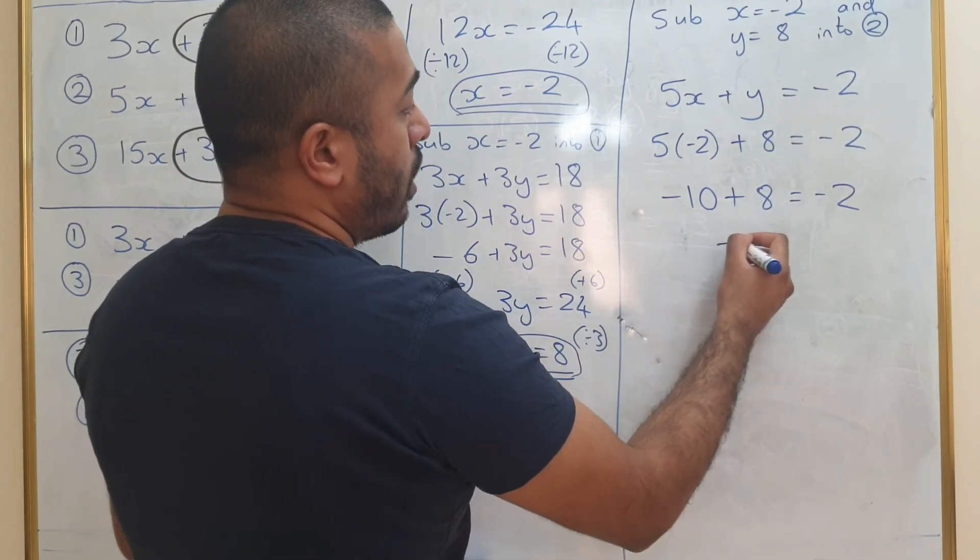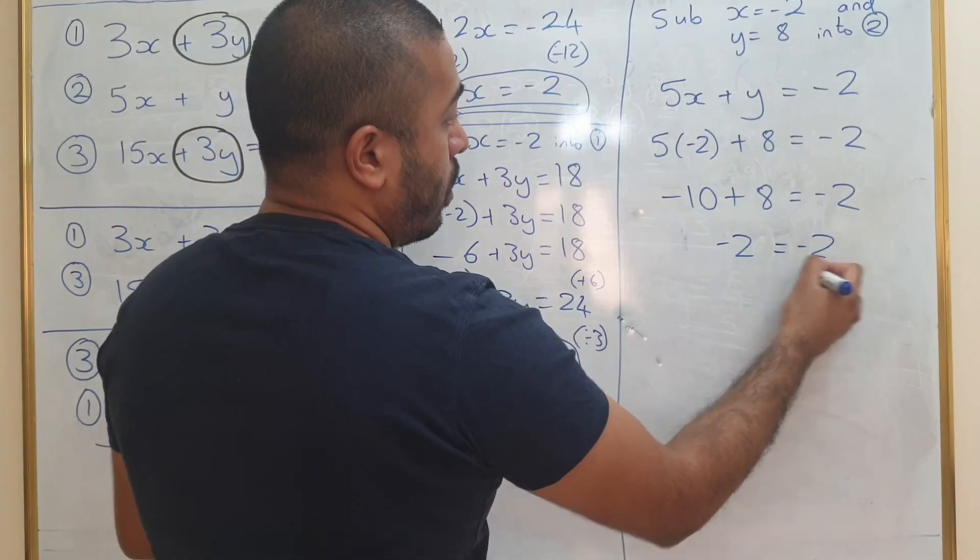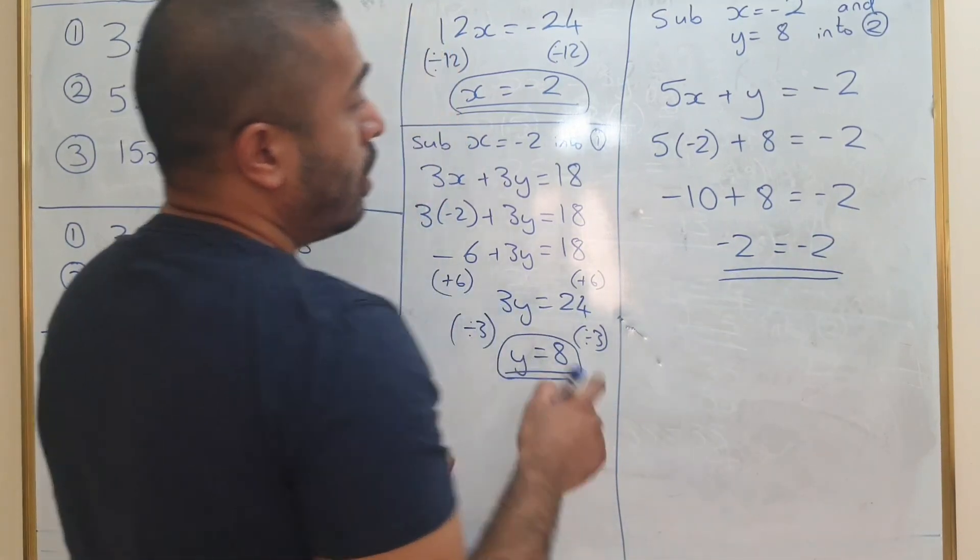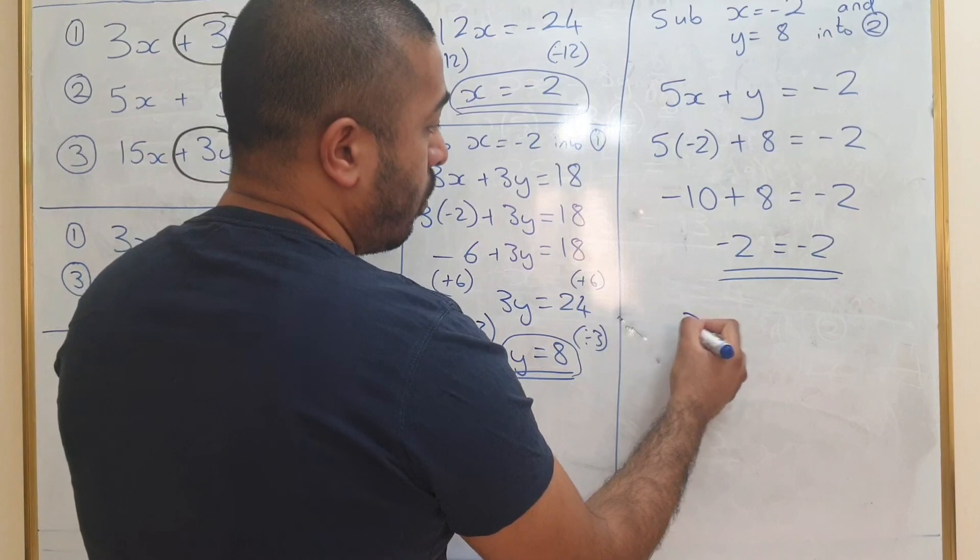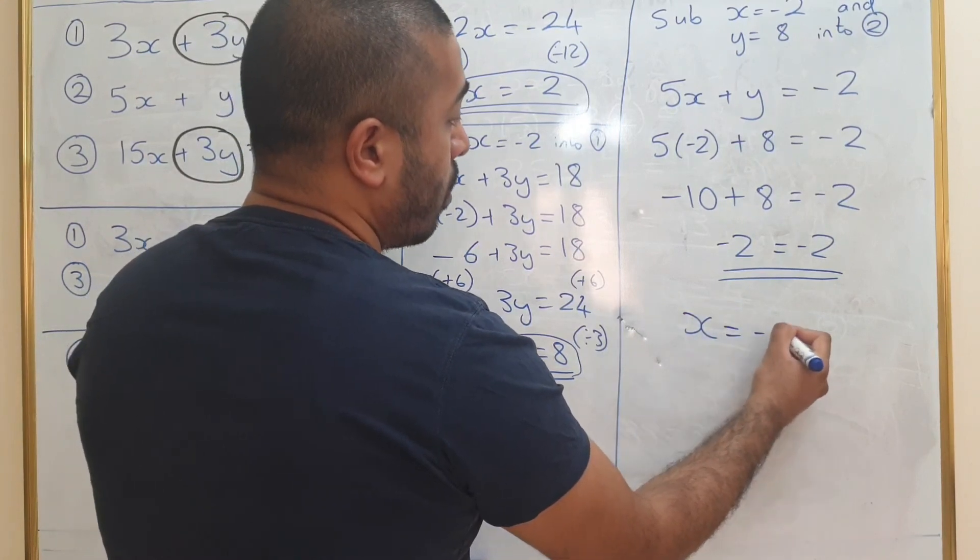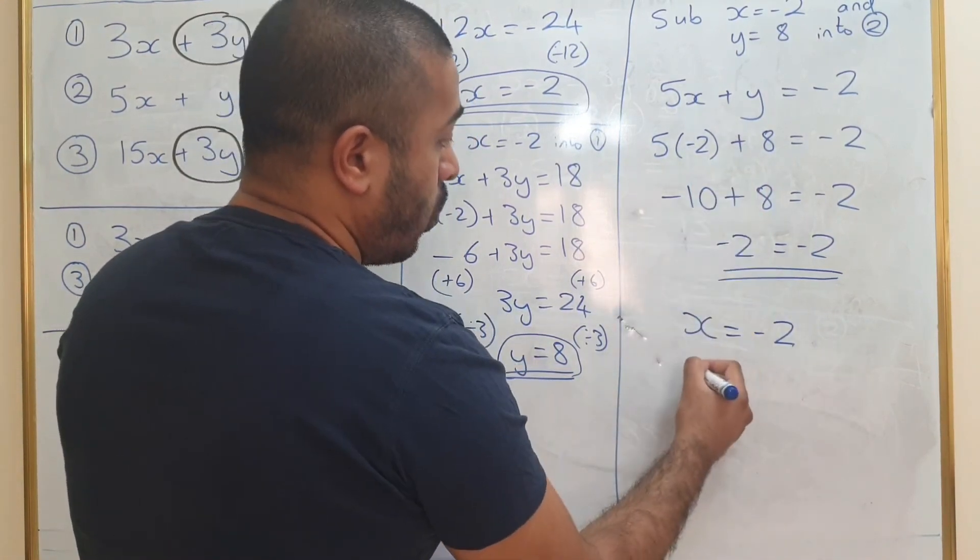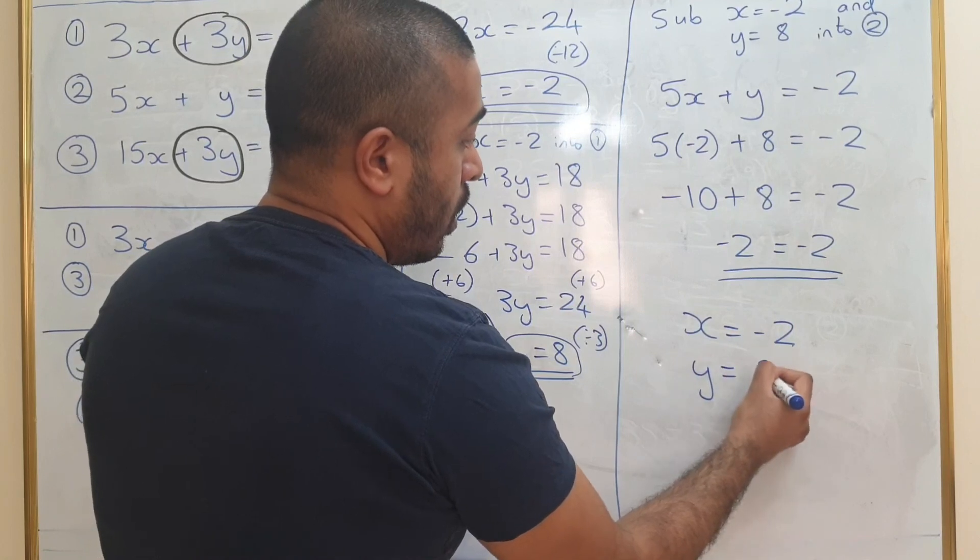Once you do that, you get minus 2 on both sides. Therefore, your solution for x equals minus 2 and y equals 8.